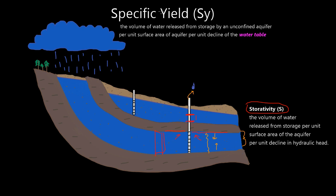That's storativity, and specific yield is something different. Specific yield is for unconfined aquifers. The definition is: the volume of water released from storage by an unconfined aquifer per unit surface area of aquifer per unit decline of the water table.